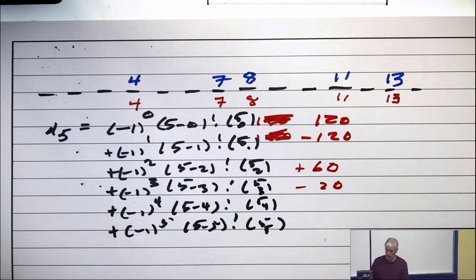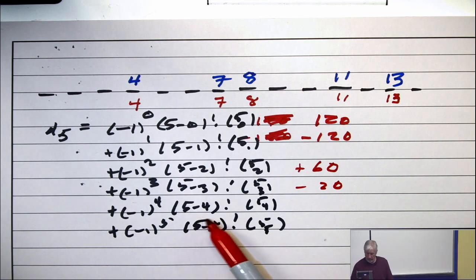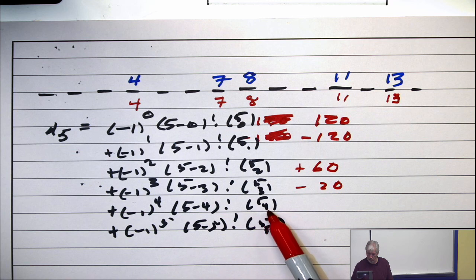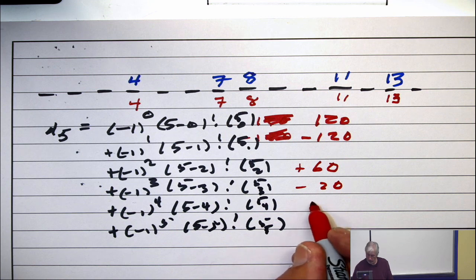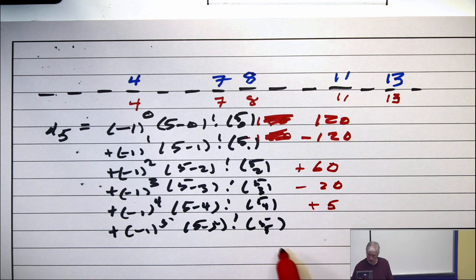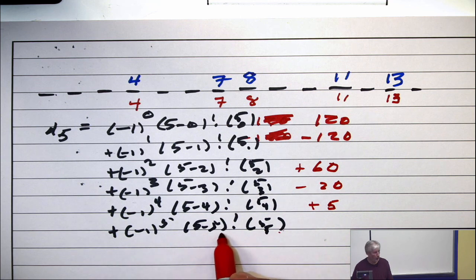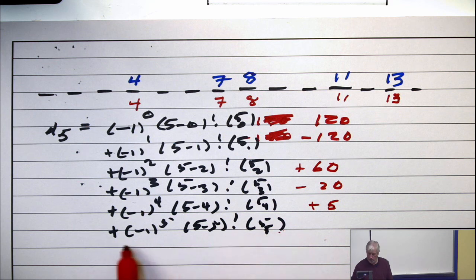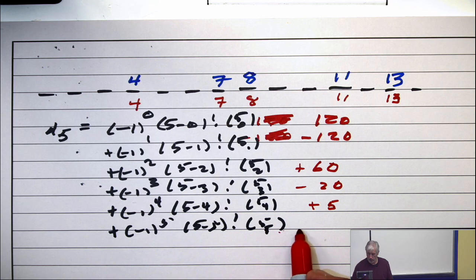Minus 20. And this term, 5 minus 4 is 1 factorial, that's 1, 5 choose 4 is 5, so this term is plus 5. Okay? What's this term? Minus 1, that's minus 1, 0 factorial is 1, 5 choose 5 is 1, so this term altogether is minus 1, okay?